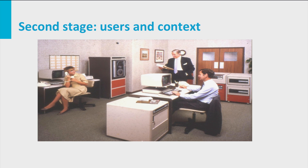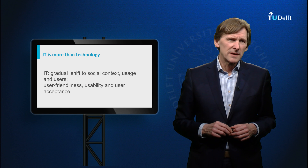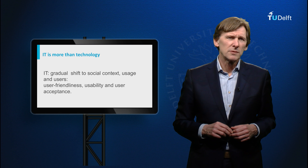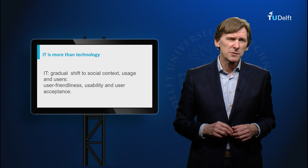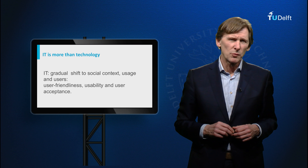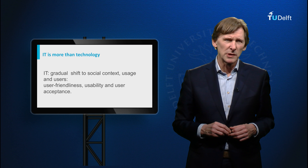In the second stage of the development of the computer, in the 70s and 80s, people started to realize that computers had to be used in real organizations, supporting real human users with specific needs and requirements, in different work environments and social and institutional settings. The social and behavioral sciences became then increasingly involved with information technology in the form of human-computer interaction, participatory design and social informatics. This shift to social context, usage and users, however, was primarily motivated by attempts to identify potential barriers to the successful implementation of systems and to prevent failures and failed investments. In any case, it led to the study of user-friendliness, usability and user-acceptance.